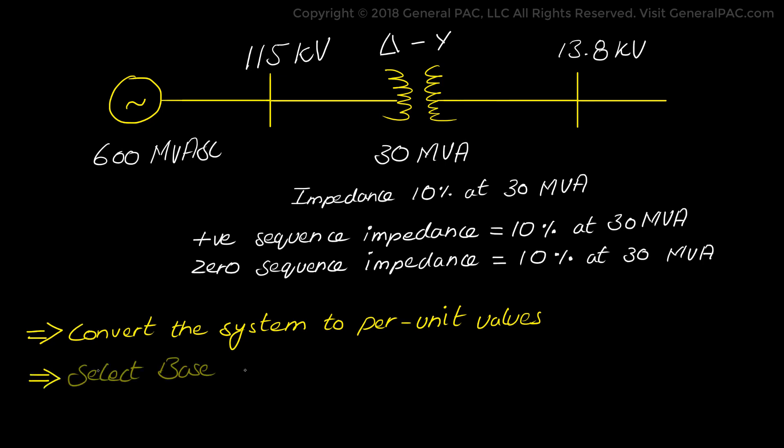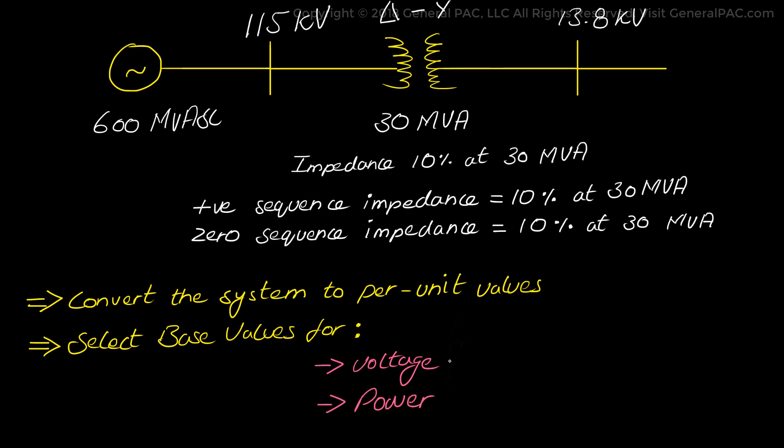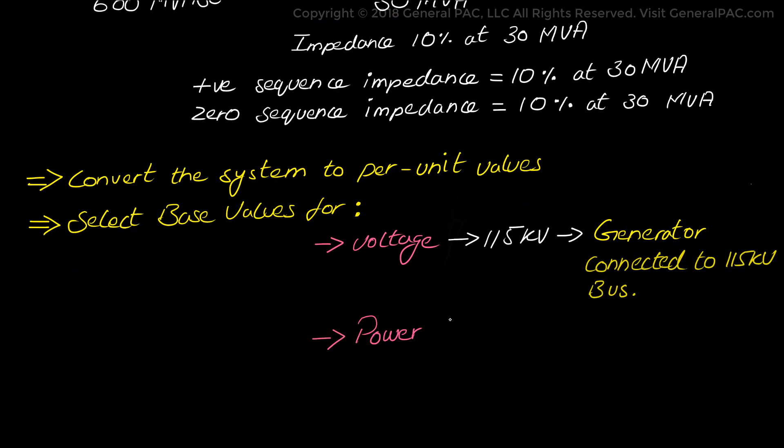Now for this we need to select the base values for voltage and power. That is the first step. So we will select 115 kV as our base voltage because the generator is connected to the 115 kV bus. And we will select 30 MVA as the base value for power because the impedance of the transformer is given as a percentage of this value which is 10% at 30 MVA.